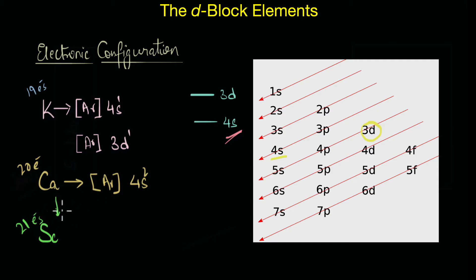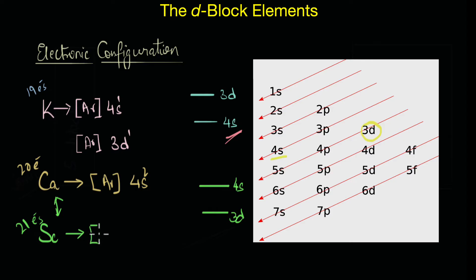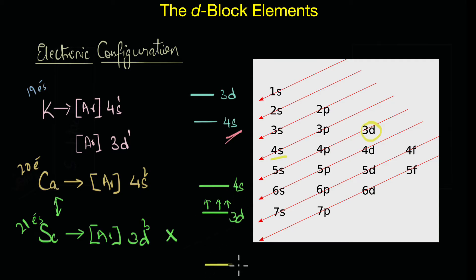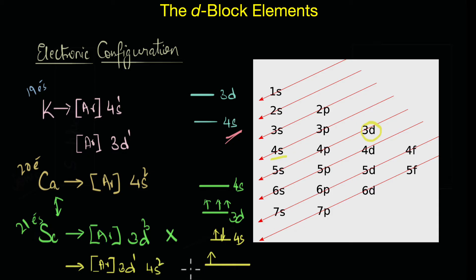Between calcium and scandium, the order of energy levels reverses — 4s becomes slightly higher in energy than 3d. Now with 21 electrons, if 3d is lower in energy than 4s, does that mean scandium's configuration would be [Ar]3d³? Actually, no. It turns out that because 3d has slightly less energy, the first electron enters a 3d orbital, but the second and third electrons enter the 4s orbital. So the actual electronic configuration of scandium is [Ar]3d¹4s².